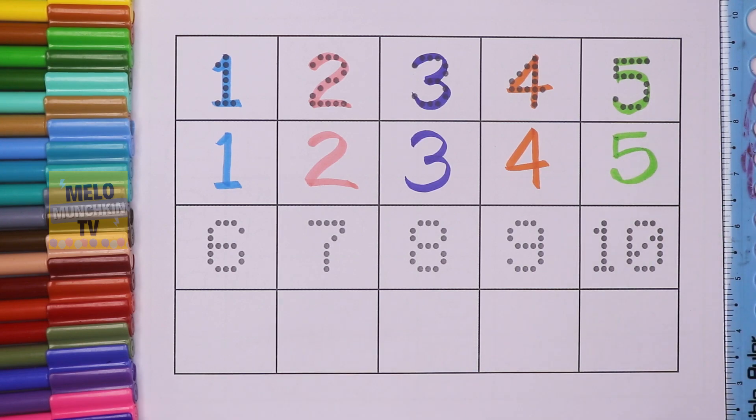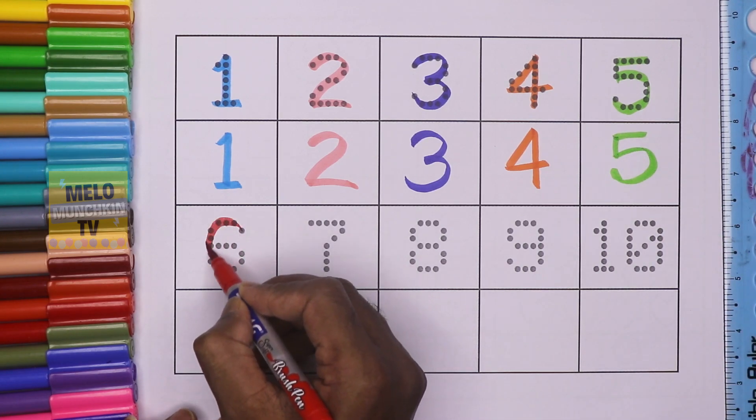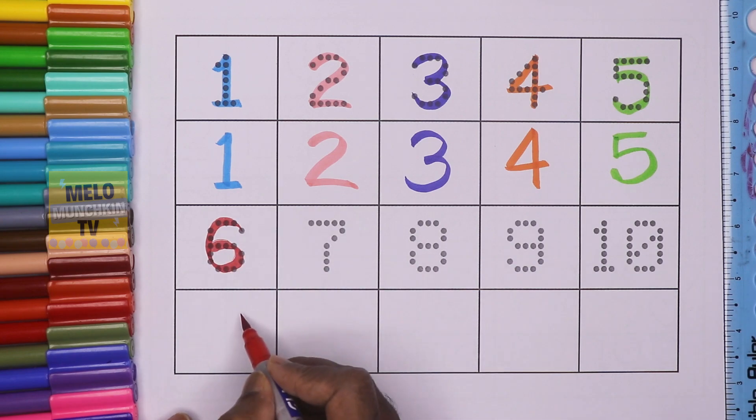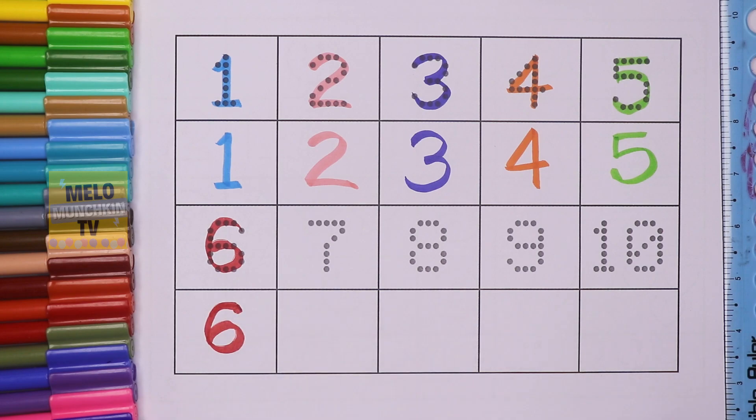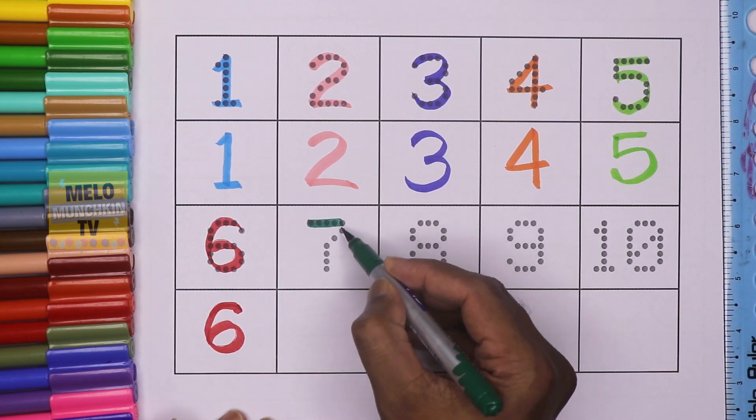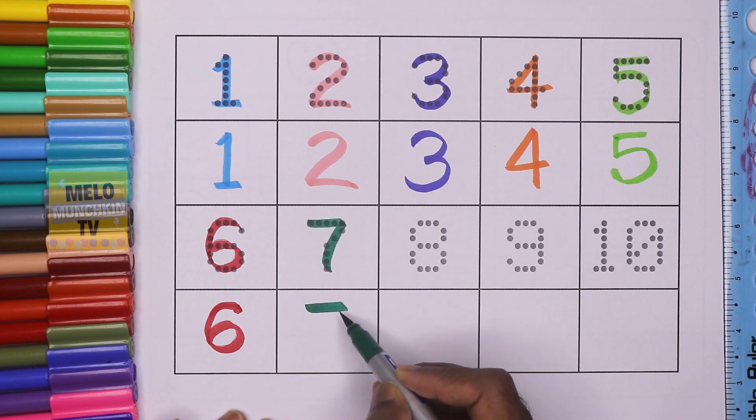This is number six: S-I-X, six. S-I-X, six. This is number seven: S-E-V-E-N, seven. S-E-V-E-N, seven.